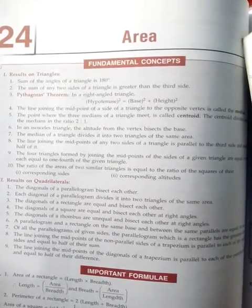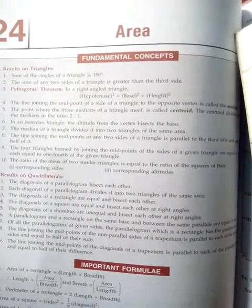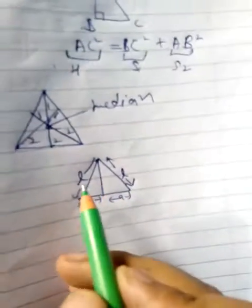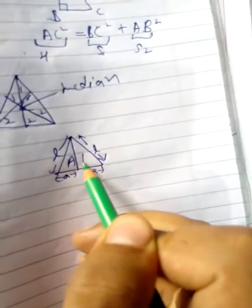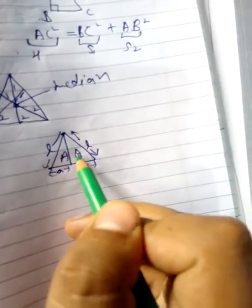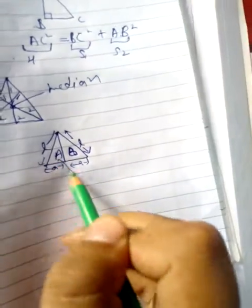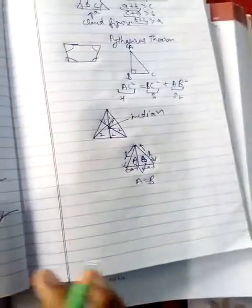The median of a triangle divides it into two triangles of the same area. So if the median divides the triangle into area A and area B, then A and B are equal — both areas are the same.